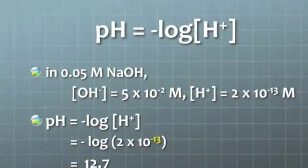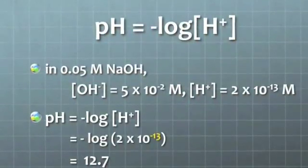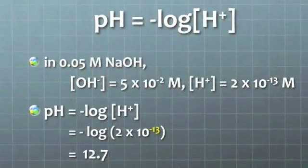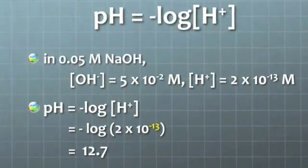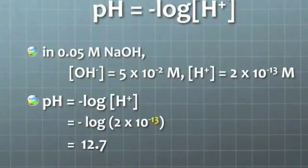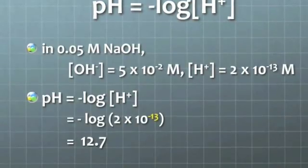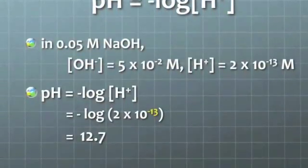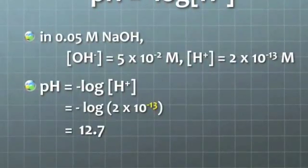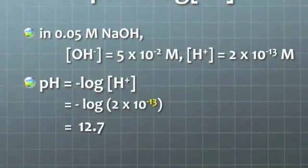Bases have a high concentration of OH-minus, and so the concentration of H-plus is reduced. For example, 0.05 molar sodium hydroxide has 5 times 10 to the minus 2nd molar of OH-minus, and only 2 times 10 to the negative 13th molar of H-plus. Thus its pH is the negative logarithm of 2 times 10 to the negative 13th, and that is 12.7.